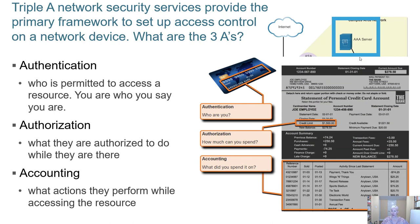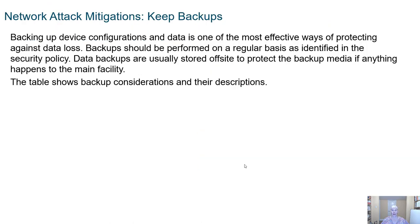Here's a bank example of AAA: I can log in to the bank (authentication), it tells me how much I can send or spend (authorization), and it keeps track of everything spent on my credit card or taken from my checking account (accounting). Another form of network attack mitigation is to keep backups.